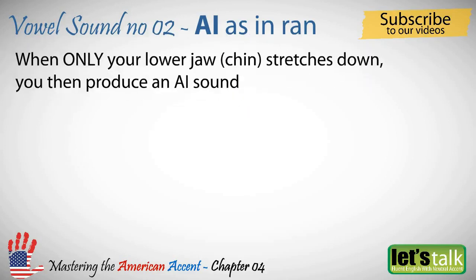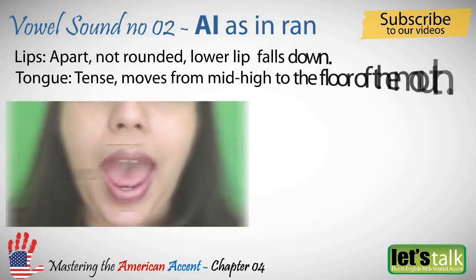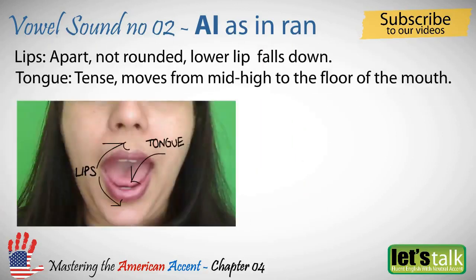When only your lower jaw or your chin stretches down, you then produce an A sound. The lips are apart and not rounded, the lower lip falls down, and the upper lip remains almost stable. The tongue is tense and moves from mid-high to the floor of the mouth.